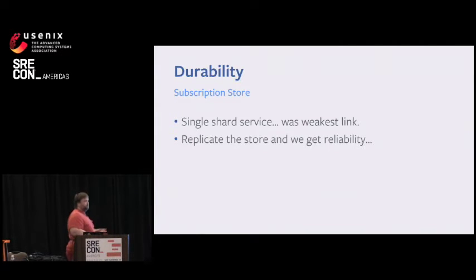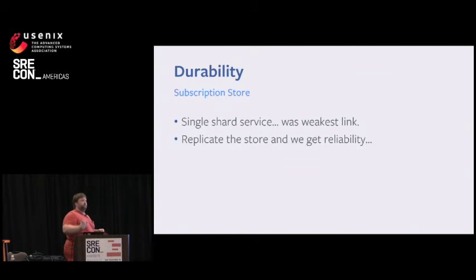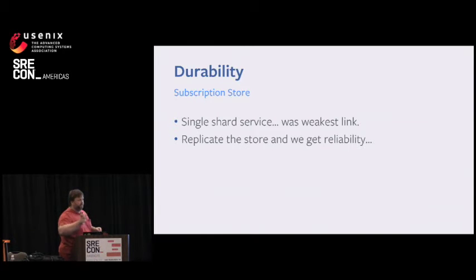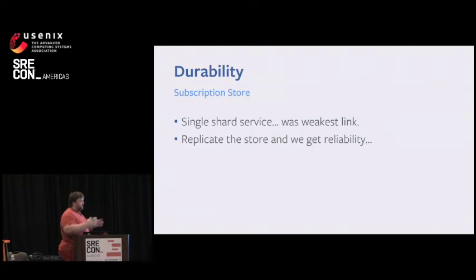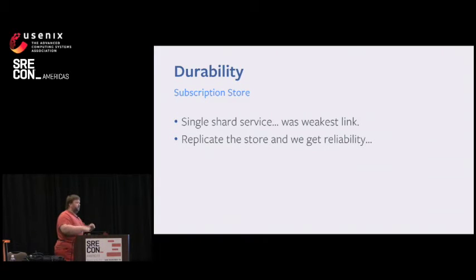It turns out we had a problem: it was a single-sharded service. We had an anti-entropy model, but what we didn't know was what kind of holes would be introduced in the stream — and those holes are a missed opportunity for a subscription realizing its full potential. We realized there was a problem, and we knew what the answer was: replicate. Done.